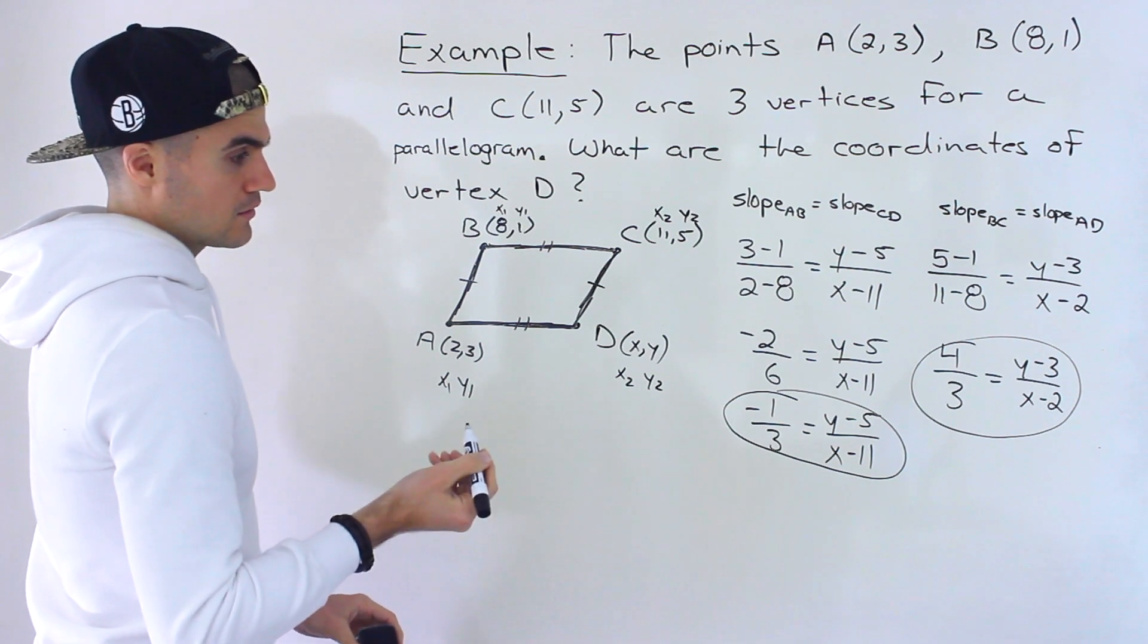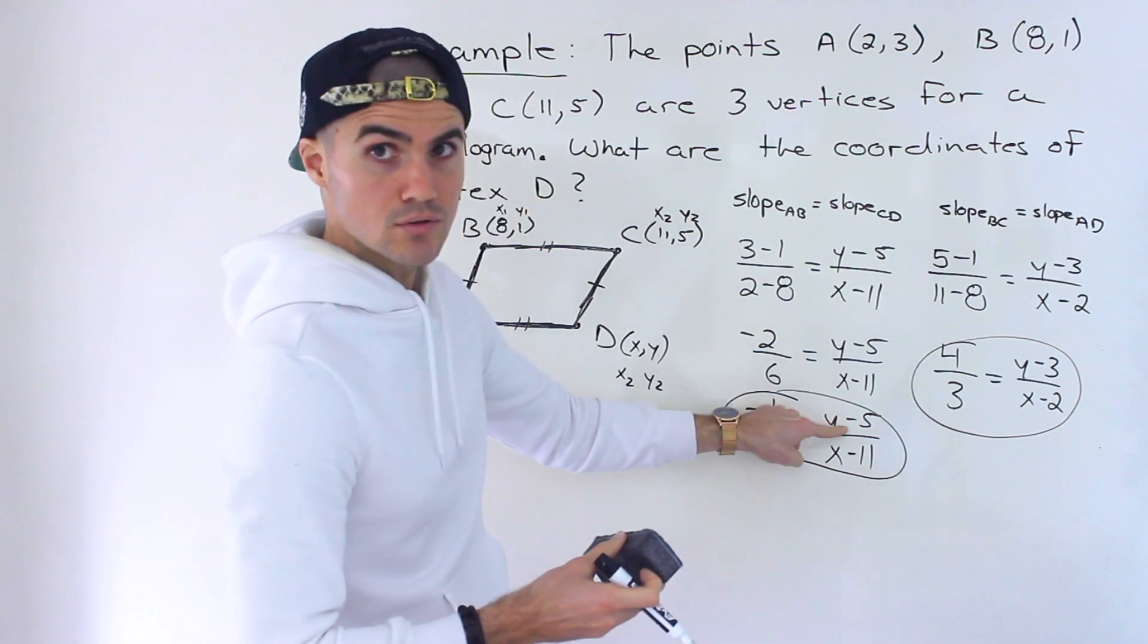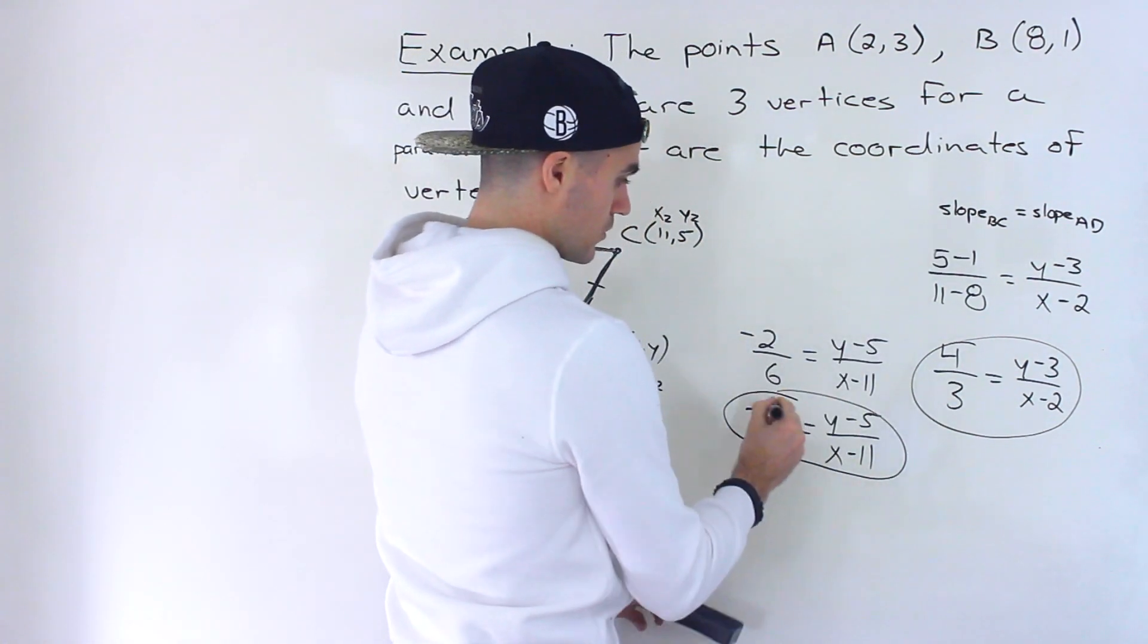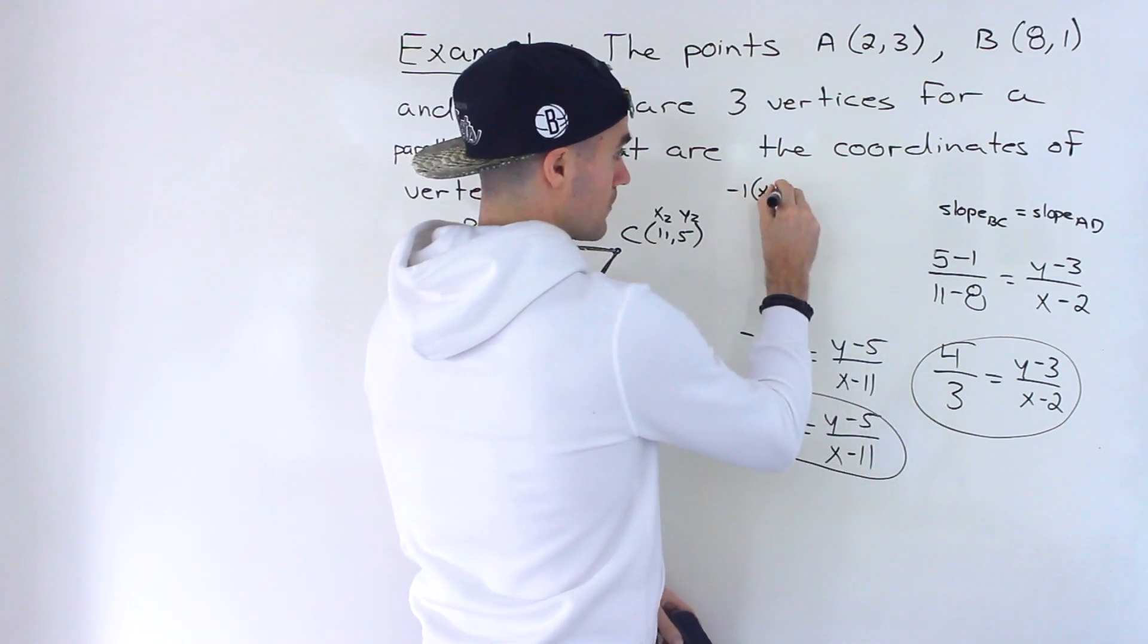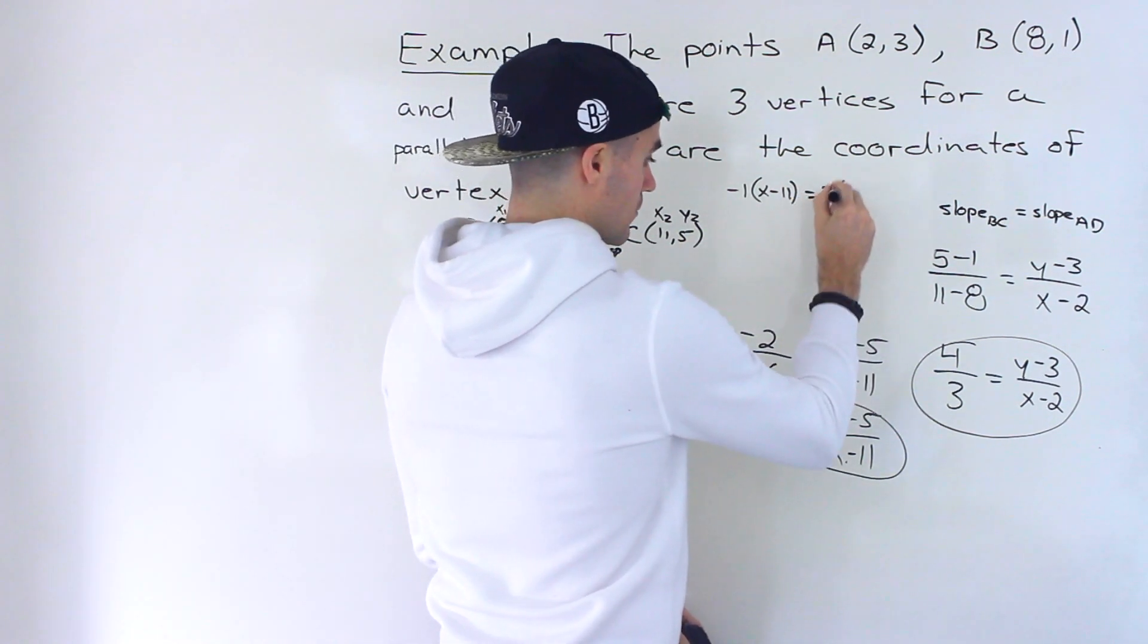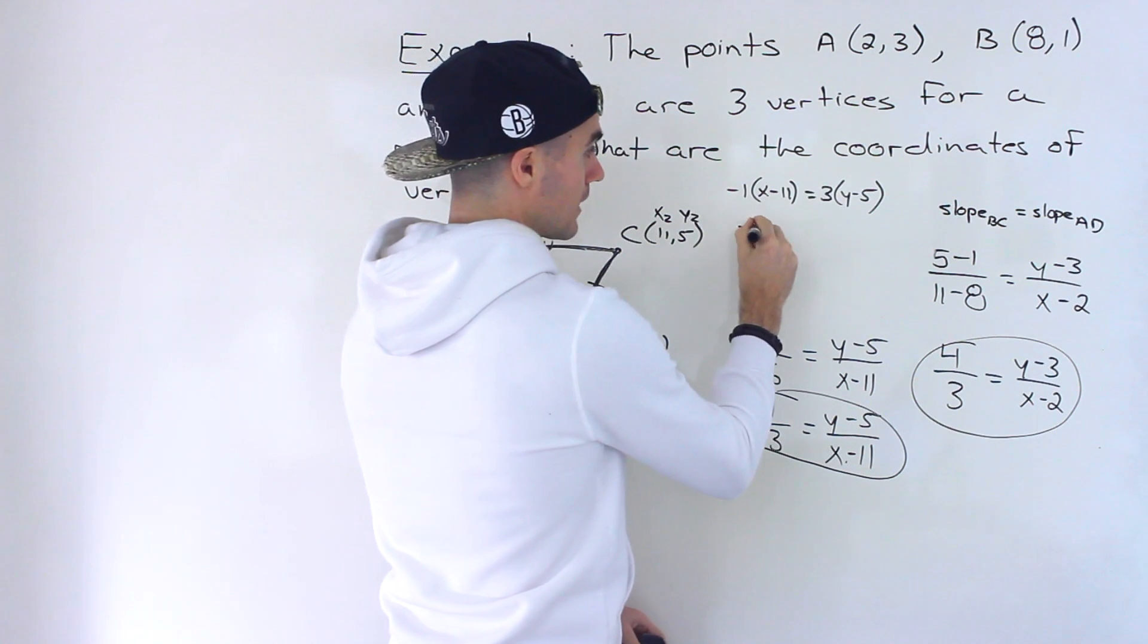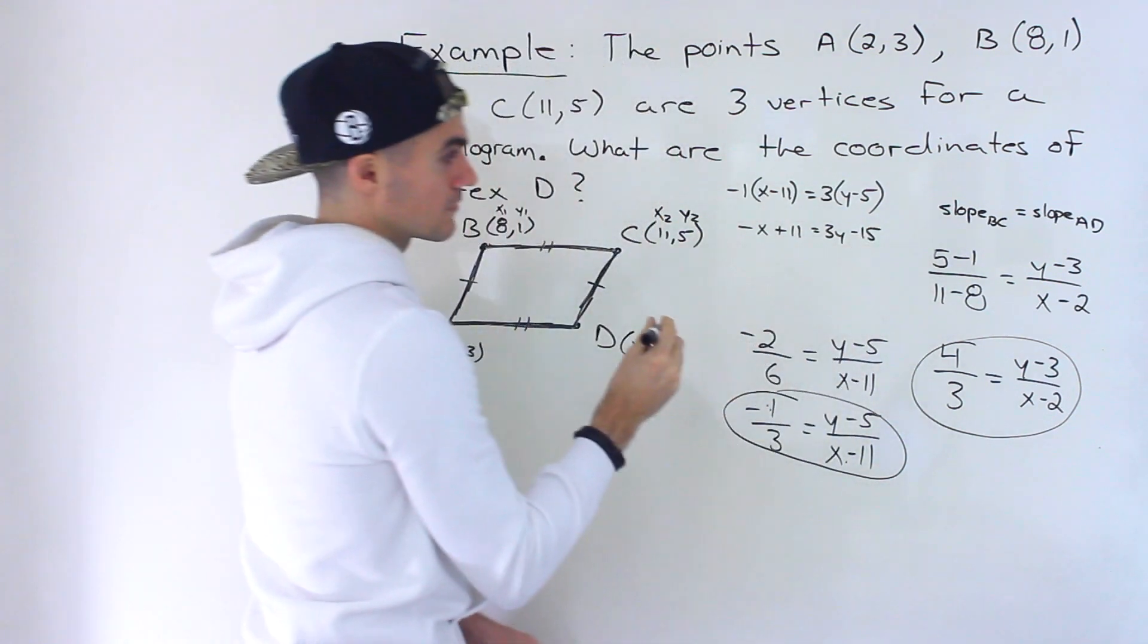And from here, the way you want to solve them, as I mentioned, is you actually want to cross-multiply here to kind of get rid of these fractions. So if you do that, you'd end up with negative 1. So we'd have negative 1 times X minus 11. You want to make sure you put that in brackets, this times that, and then you'll have 3 bracket Y minus 5. And then from here, you could simplify this. You can distribute everything. So we'll have negative X plus 11 equals 3Y minus 15, like that.